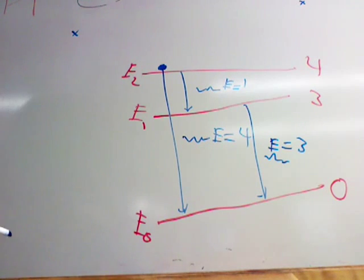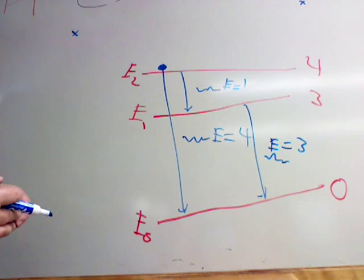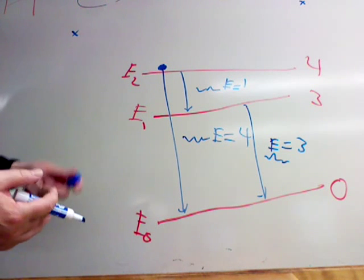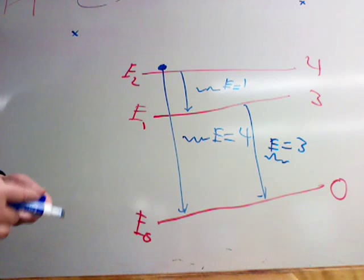So, in this simple three-level atom, there are three possible photon energies that the atom can emit. It can emit a photon of energy one, or energy three, or energy four.